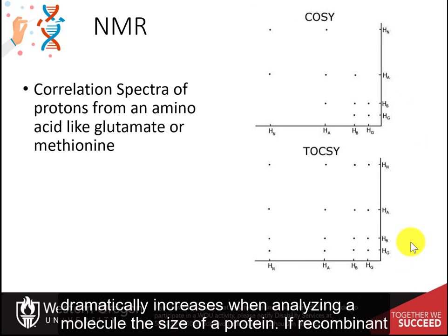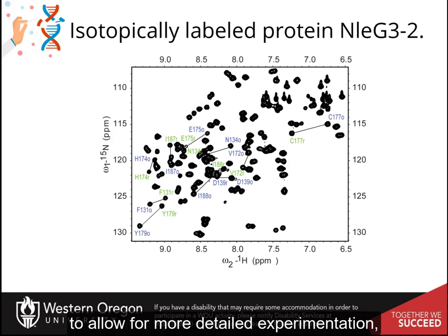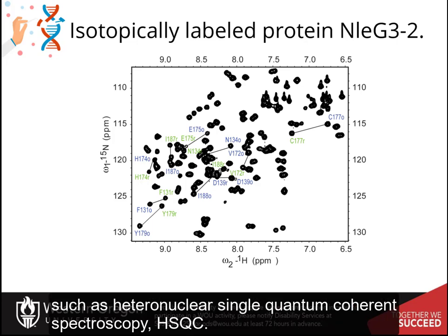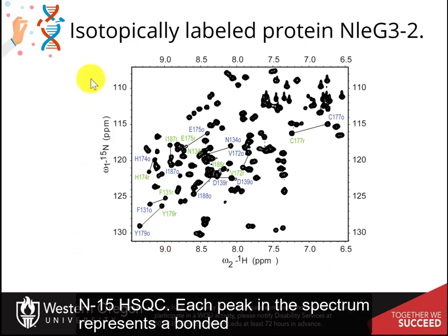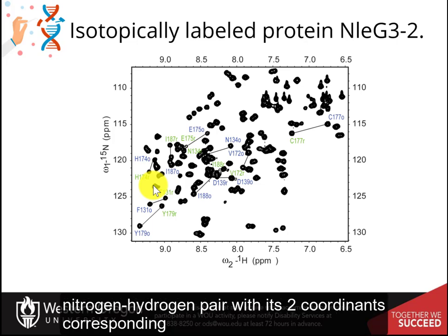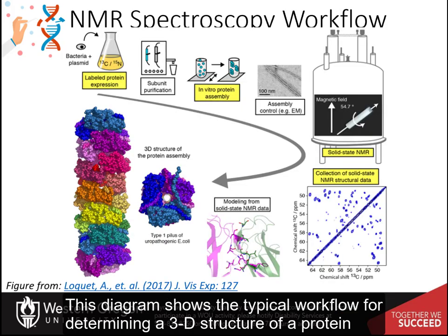The complexity of the spectra dramatically increases when analyzing a molecule the size of a protein. If recombinant proteins can be produced, the resulting protein can be labeled with nitrogen-15 or carbon-13 to allow for more detailed experimentation, such as heteronuclear single quantum coherence spectroscopy, HSQC. The most commonly performed N15 experiment is the H1-N15 HSQC. Each peak in the spectrum represents a bonded nitrogen-hydrogen pair, with its two coordinates corresponding to the chemical shifts of the hydrogen and nitrogen atoms. This diagram shows a typical workflow for determining the 3D structure of a protein using NMR.